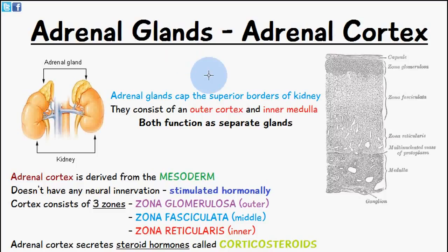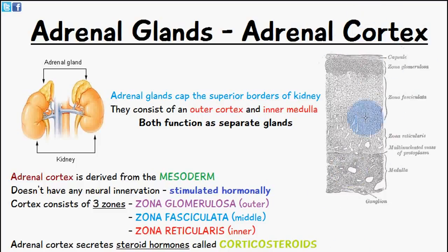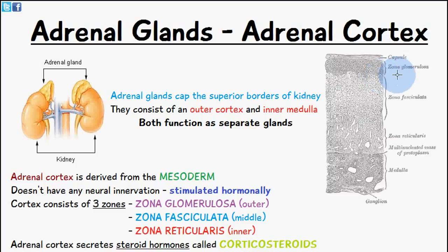In this video we're just going to focus on the adrenal cortex, and in the next video we'll talk about the adrenal medulla. They consist of the outer cortex and the inner medulla, and they both function as separate glands. Here we can see a detailed diagram: at the top we have the capsule, then the adrenal cortex, which is divided into three layers.